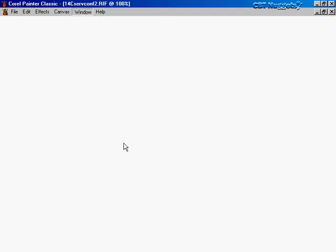The configuration file is called /etc/exports, and the format looks like this. Each line starts with a directory — the one being exported — followed by a host we're exporting it to and a set of options. The stuff in square brackets is optional. You must give at least one host, and you can list as many hosts as you want for that directory.